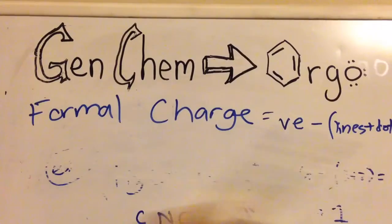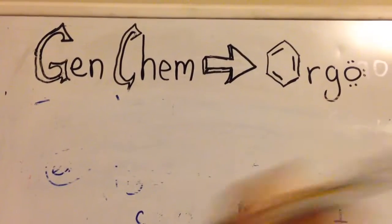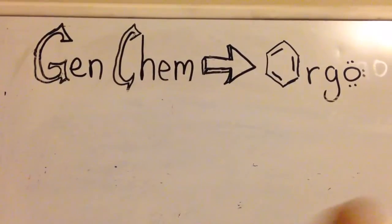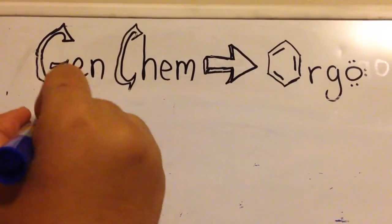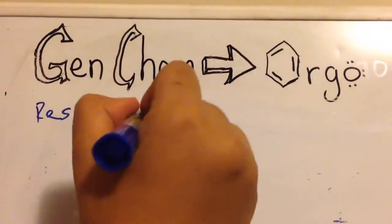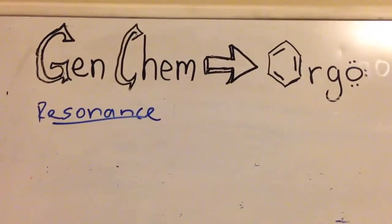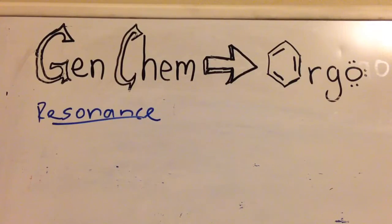The next gen chem review topic is resonance structures. You should know the different types and how to draw resonance structures. Resonance does come up a lot in orgo chem, and there are many videos that already explain it well, so I don't want to make this video longer than it already is.